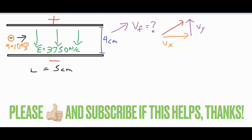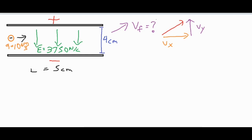We already have one of those — we already have vx, the velocity in the x direction, which is 9 times 10 to the 6 meters per second. Now we need to find the final velocity in the y direction. Just like with kinematics, you need to have three known variables in order to solve for the unknown variable, which is our vf.